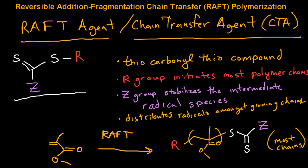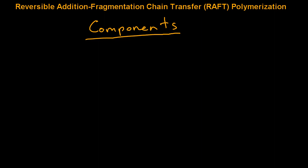The RAFT agent essentially distributes radicals amongst growing chains. Ideally, when you do a polymerization, you'll end up with a polymer that will be initiated by the R group, and then on the other end will be capped by the thiocarbonyl-thio group.